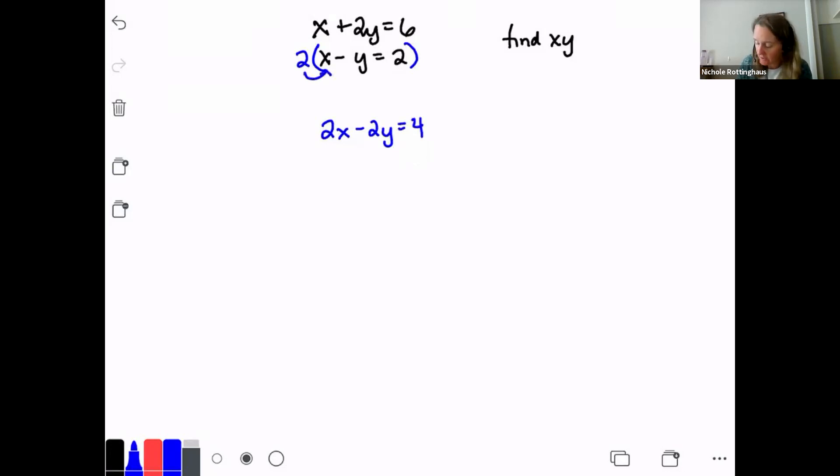I prefer to find the equivalent system and not have to multiply things by negative numbers if I can avoid it. So if I multiply the bottom equation by two, I end up with 2x minus 2y equals four. I multiplied each number by two. And then I just bring down my top equation, which was x plus 2y equals six. Now I can add those two equations together, and the y's are going to drop out. I end up with 3x equals 10. Divide by 3. So x equals 10 over 3. Oh, fractions.